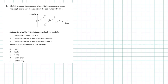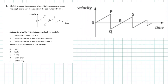Question 2 from the 2018 Higher Physics section 1. A ball is dropped from rest and allowed to bounce several times. The graph shows how the velocity of the ball varies with time — so we're dealing with a velocity-time graph. We're asked to look at three statements and find which are correct. Before we start, velocity is a vector, which means it can be represented by an arrow pointing in the direction of movement.